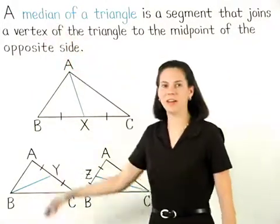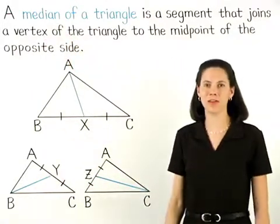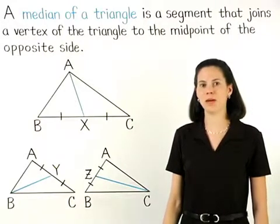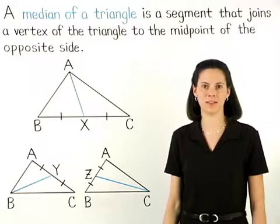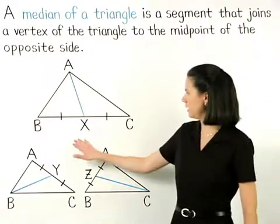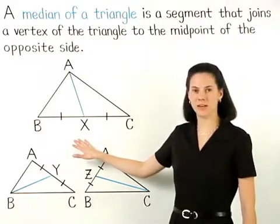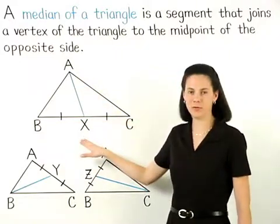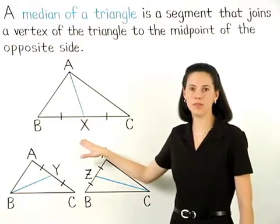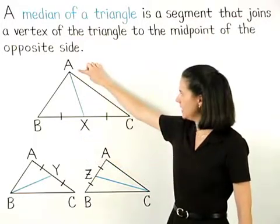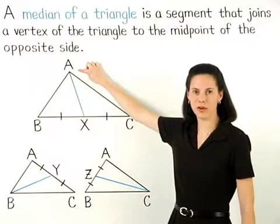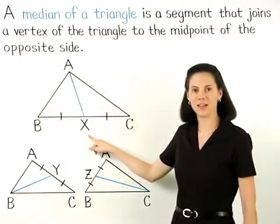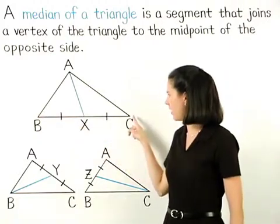A median of a triangle is a segment that joins a vertex of the triangle to the midpoint of the opposite side. For example, in triangle ABC shown here, segment AX is a median of triangle ABC because one of its endpoints, A, is a vertex of the triangle, and its other endpoint, X, is the midpoint of the opposite side.